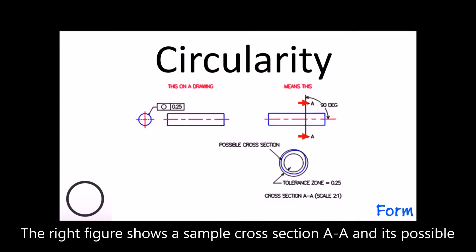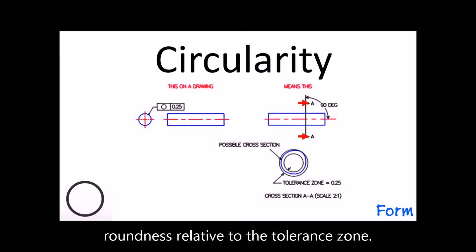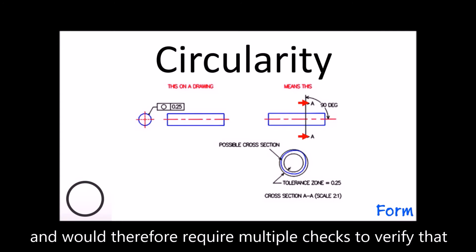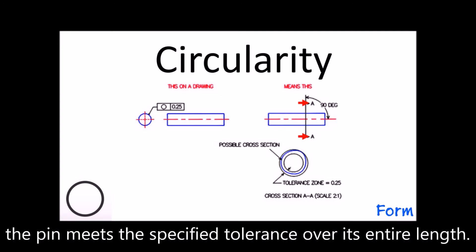The right figure shows a sample cross-section AA and its possible roundness relative to the tolerance zone. Note that circularity applies to the entire length of the cylinder and would therefore require multiple checks to verify that the pin meets the specified tolerance over its entire length.